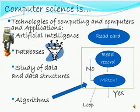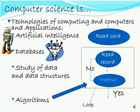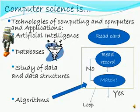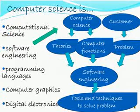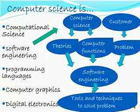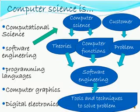Algorithms are sequences of instructions that process data structures, which are often used for calculations and data processing. Computational science covers the analysis of numerical methods for solving math problems using a computer. Software engineering is the study of tools and techniques for software design, development, testing, and maintenance.